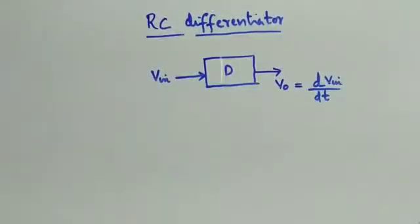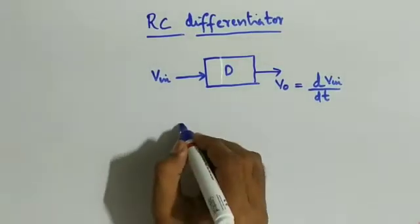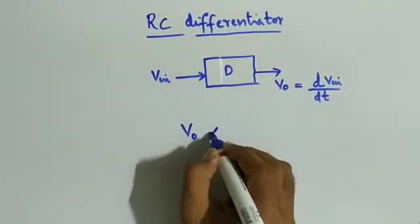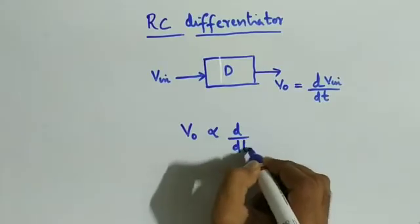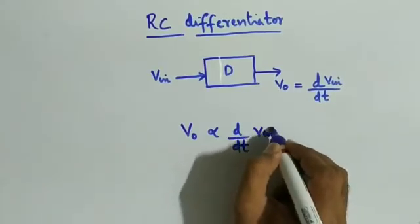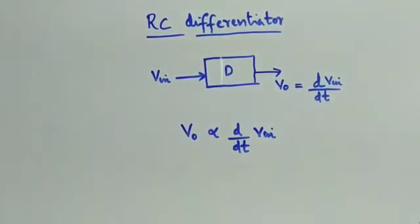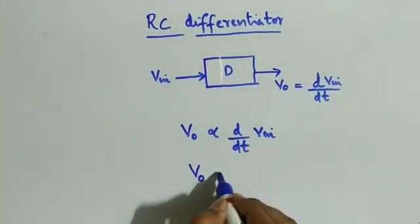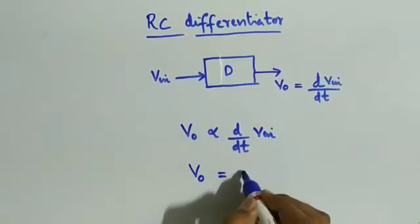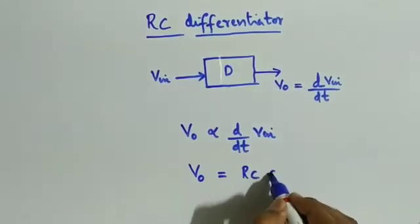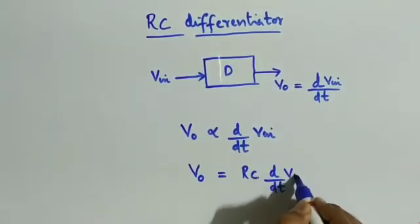Dear students, if we have a differentiator circuit, suppose the input voltage to a differentiator circuit, the output voltage is the derivative of the input signal. That is, output voltage is directly proportional to the derivative of the input signal. For an RC differentiator, using an RC combination, your output voltage is equal to RC, some constant RC, into the derivative of the input signal.